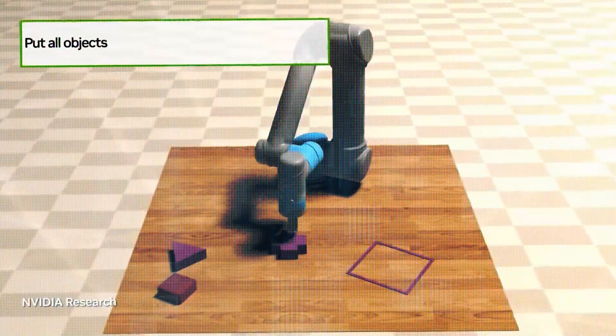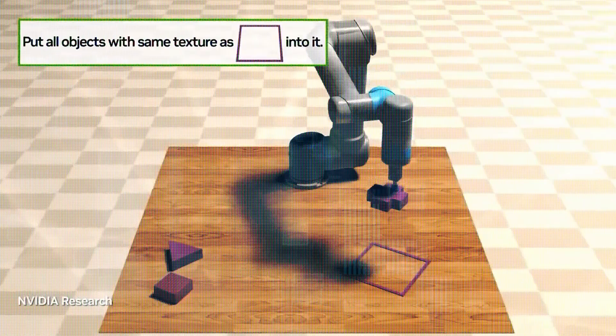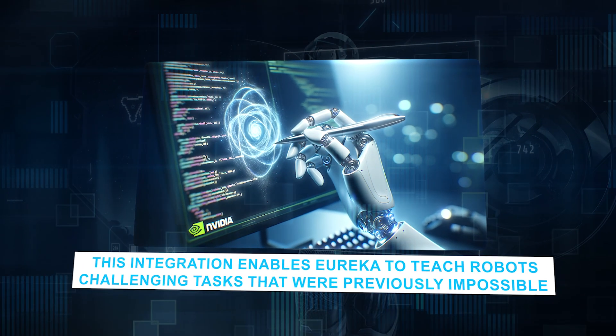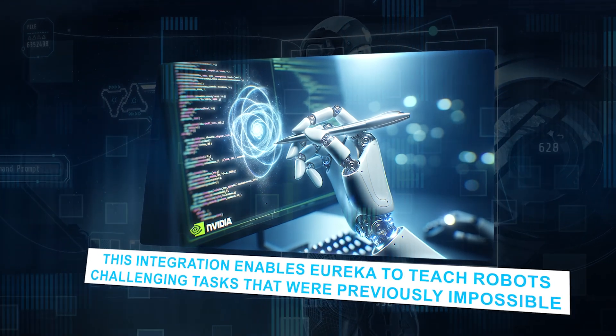What makes Eureka unique is that it combines generative and reinforcement learning methods. This integration enables Eureka to teach robots challenging tasks that were previously impossible.